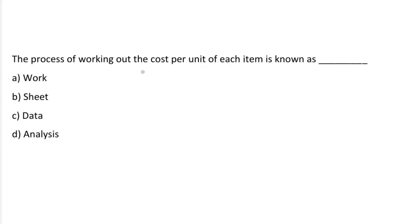Next question: the process of working out the cost per unit of each item is known as — Option A: Work. Option B: Sheet. Option C: Data. Option D: Analysis. The correct answer is option C, Data.